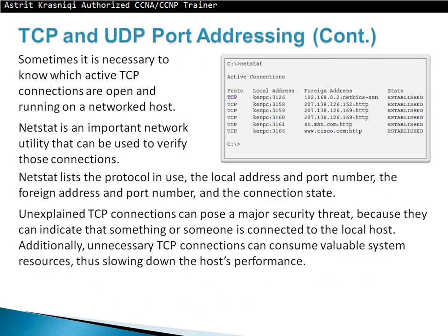Sometimes it is necessary to know which active TCP connections are open on the network. Netstat is an important network utility used to verify these connections. Netstat lists the protocol in use, the local address and port number, the foreign address and port number, and the connection state. Unexplained TCP connections pose a major security threat as they can indicate that something or someone is connected to the local host. Additionally, unnecessary TCP connections consume valuable system resources, slowing down host performance.